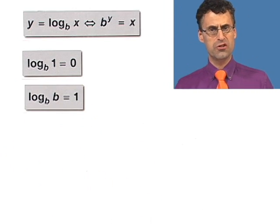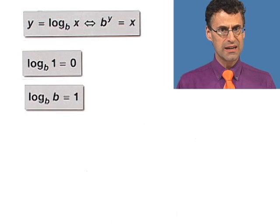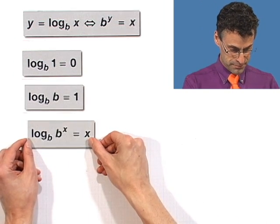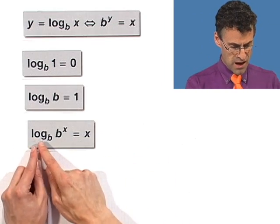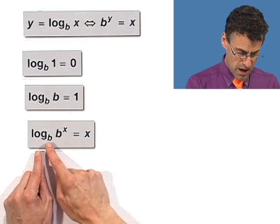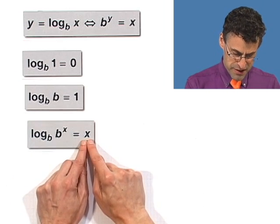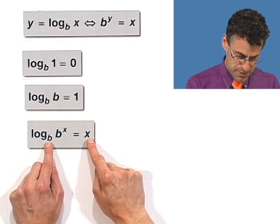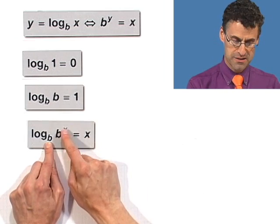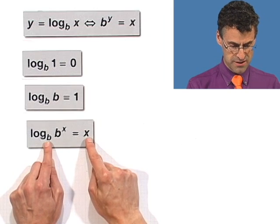Now, the next two are two of my favorites. They're a little bit tricky. The first one says log base b of b to the x equals x. Let's think about that. A log is an exponent. So this is the exponent I have to raise b to in order to get b to the x. Well, yeah. That's x. Because b to the x. There it is.